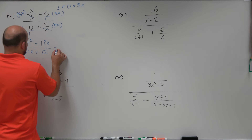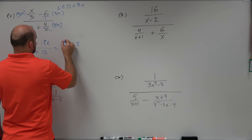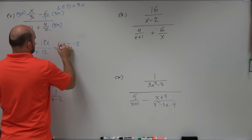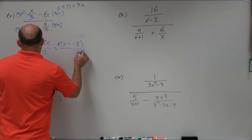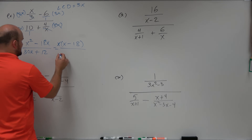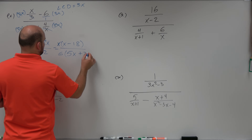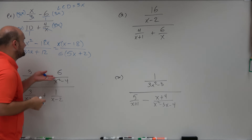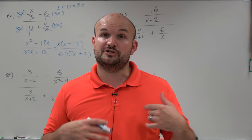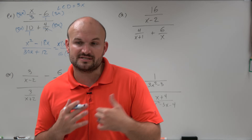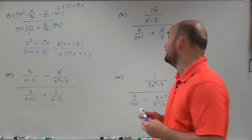Now I want to make sure I can simplify to its simplest terms. I can factor out an x from the numerator: x times (x minus 18). In the denominator, I can factor out a 6: 6 times (5x plus 2). This can't be simplified any further, but it's always good practice to simplify to the furthest point to make sure there's no other simplifying that can be done.